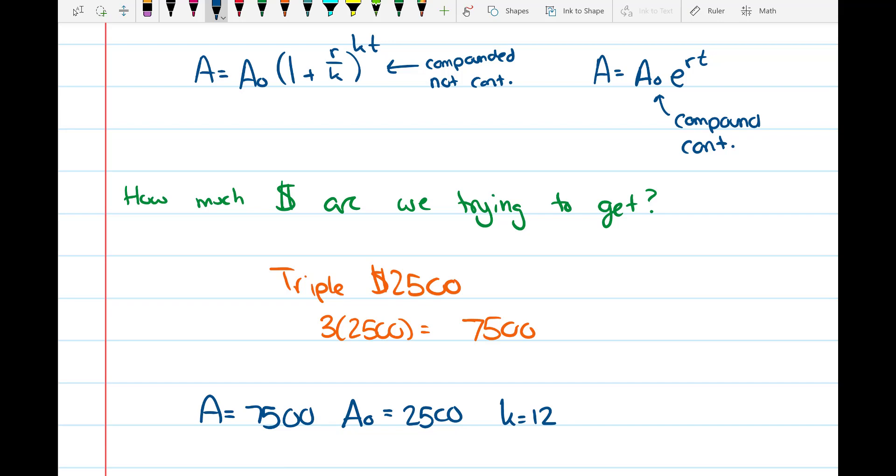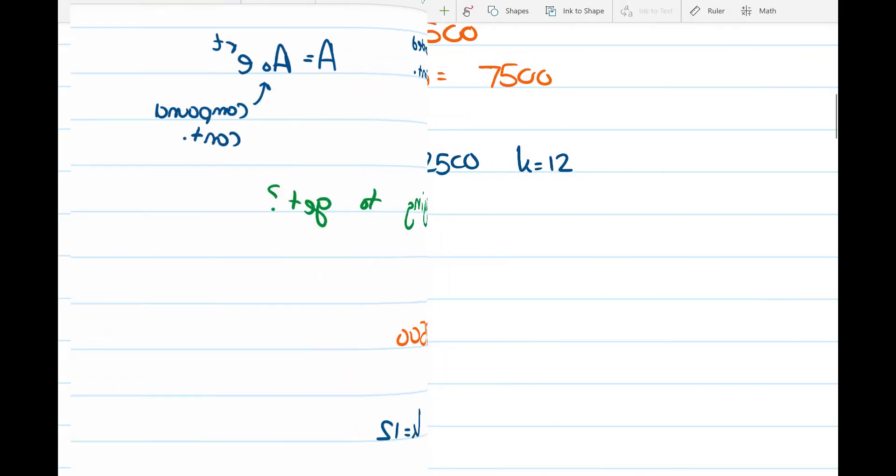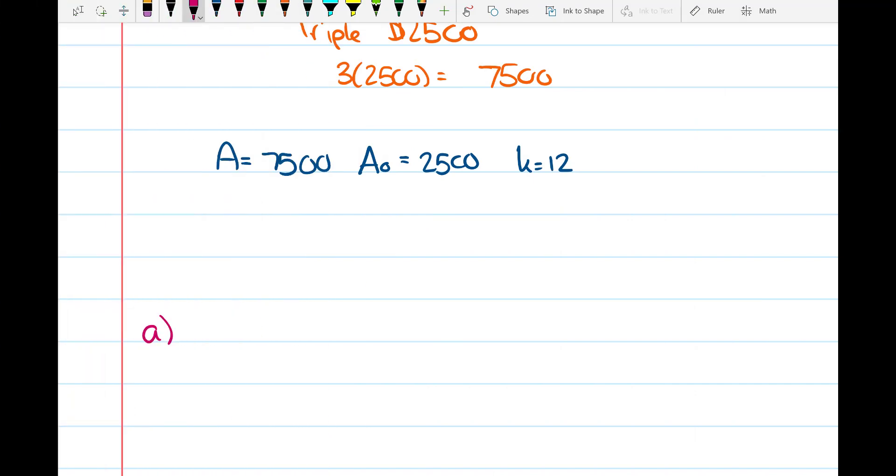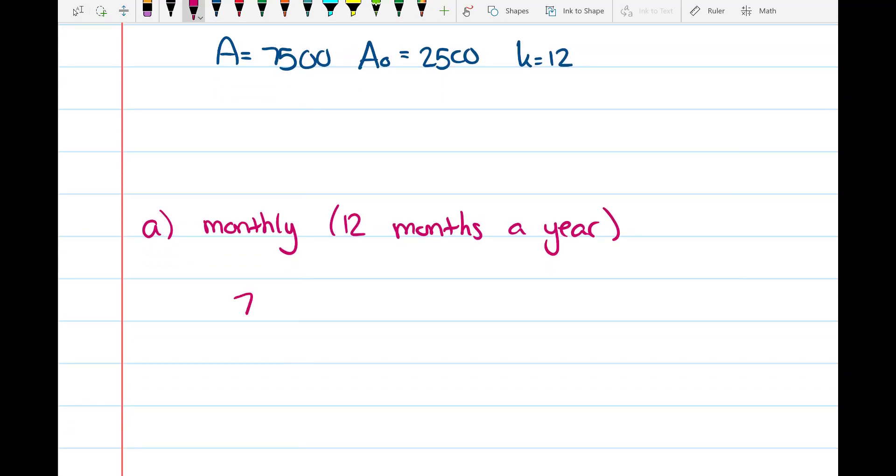And then for the continuous one, you don't need k. So go ahead, try solving this on your own. We're gonna compound monthly, and we all know that there are 12 months in a year. So 7500 = 2500(1 + 0.06/12)^(12t), where 12 is the number of months in a year and 0.06 is your interest rate. So now we're just going to solve that. We're going to divide both sides by 2500.